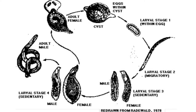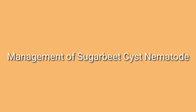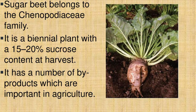Management of sugar beet cyst nematode: for sanitation, tare soils should not be brought back into fields as they can reintroduce or disperse the nematode. Tare soils could be spread evenly over a harvested field and rotated out of sugar beets for three to five years, or used as fill for washes, bar ditches, and similar areas.